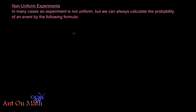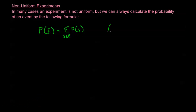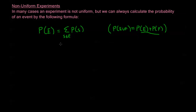In many cases an experiment is not uniform, but we can always calculate the probability of an event by the following formula: the probability of event E is equal to the sum of all probabilities P(s), where we sum over all sample points s that are in E. We're basically just generalizing the property where the probability of E union F, if disjoint, is just the sum of the probabilities. Each of the sample points in E are disjoint from each other, so we sum the probability of each individual sample point to get P(E).